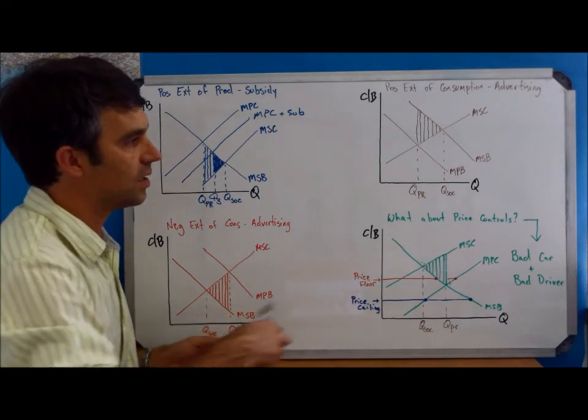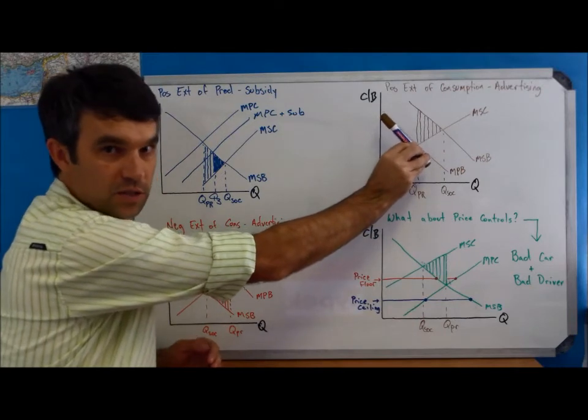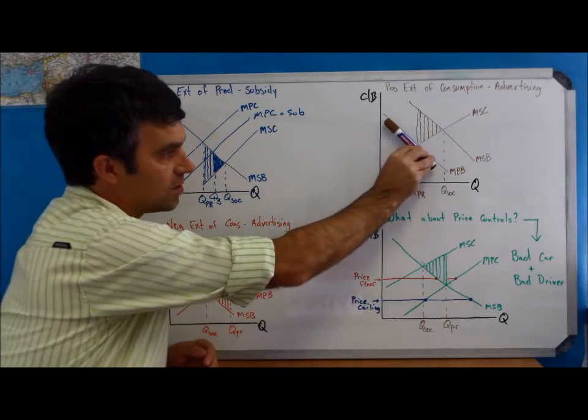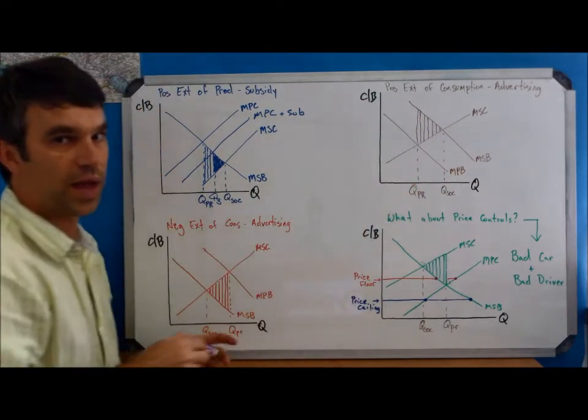So in doing this, we would see this as a shift of demand. It's increasing taste for the flu shot and an increase of demand is going to move the MPB curve over to the right. Let's see what that will look like.